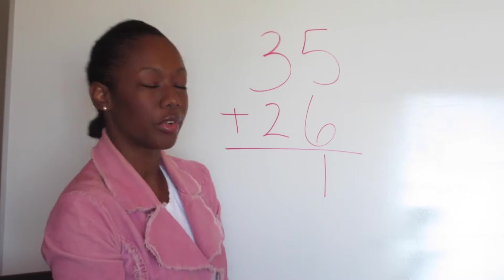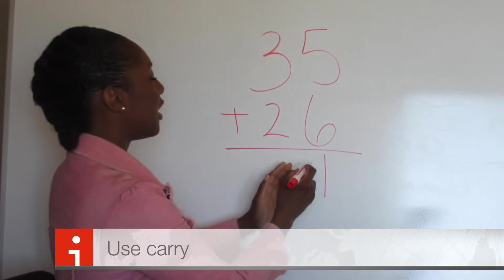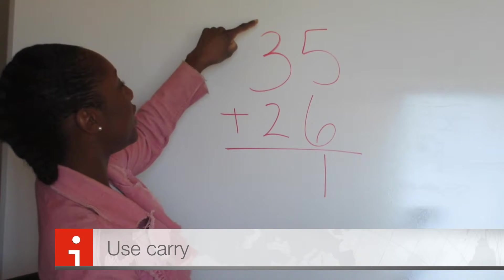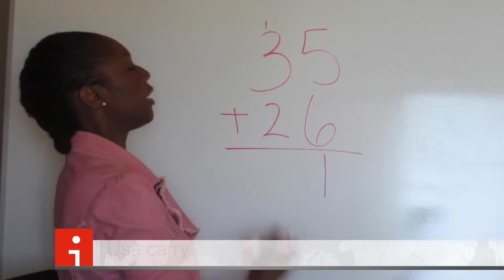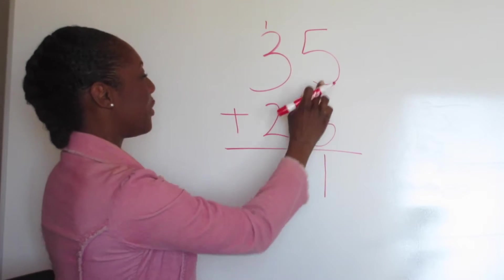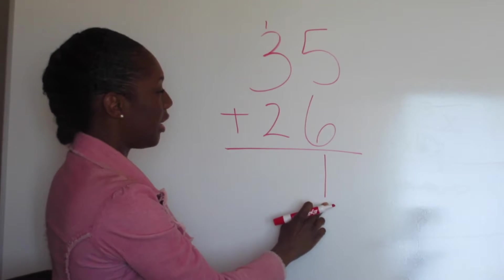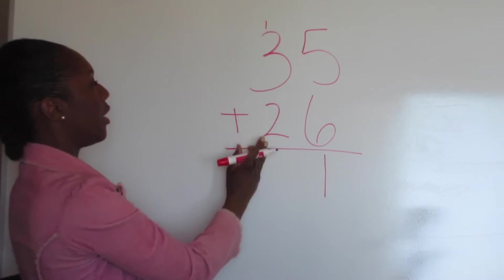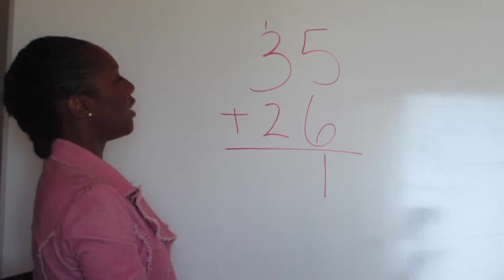Now the next rule. We can't put 11 here. We have to only put one digit and then put the other digit up here. Don't ask why. Just do it. So we have 11. We'll put one here and one there.